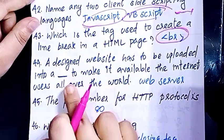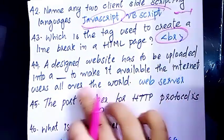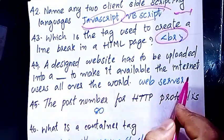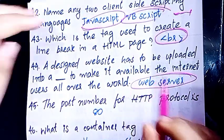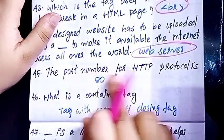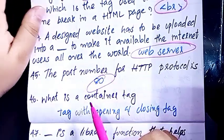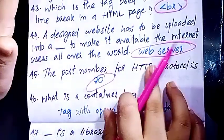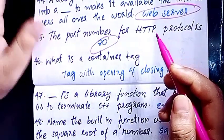Dash makes the content available to internet users all over the world — that is the web server. The port number for HTTP protocol. HTML is a container tag.